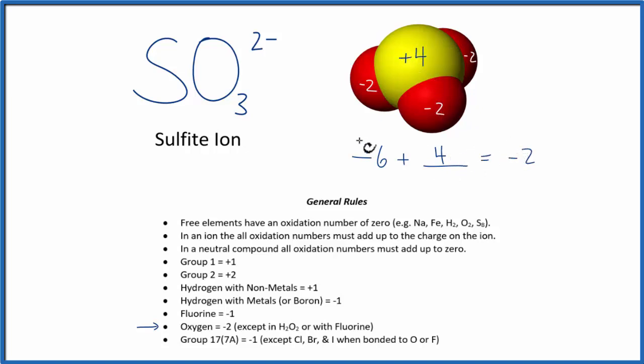And those are the oxidation numbers for the sulfite ion, SO3 2-. To recap, we used the rules here to figure out which ones we knew, in this case the oxygens, and then that information, along with the charge on the entire ion, we figured out the oxidation number for the one we didn't know, the sulfur.